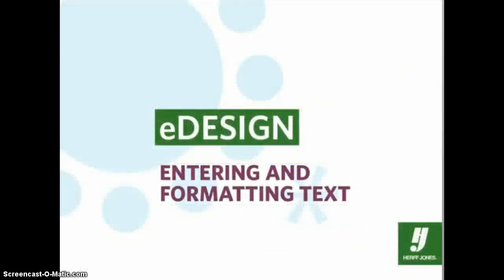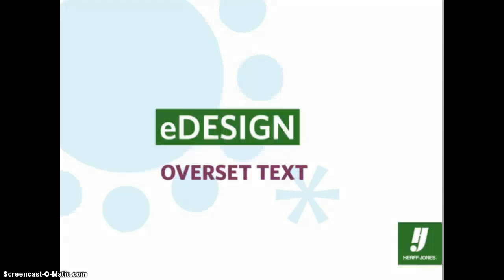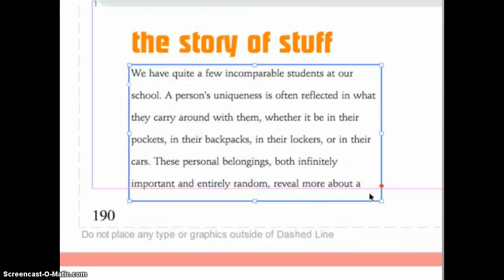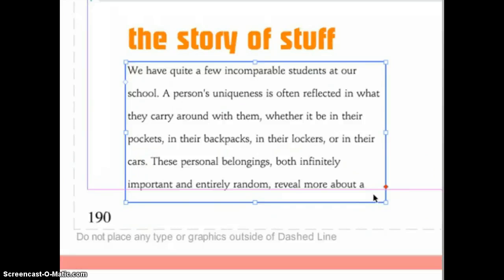And that's how you enter and format text in eDesign. From time to time as you're editing text, you'll see a red diamond appear on the right side of the text frame. This is eDesign's way of telling you that you have overset text — meaning the text you've entered will not all appear in the frame at its current size.